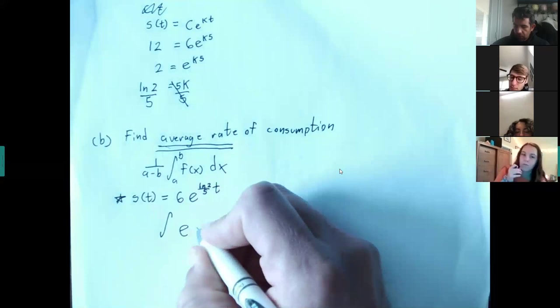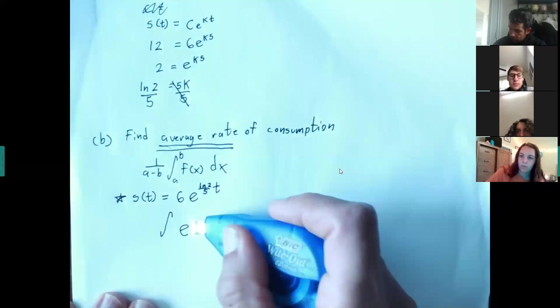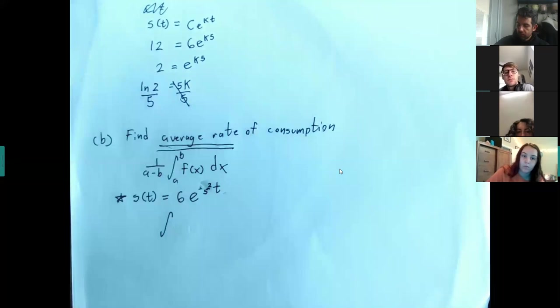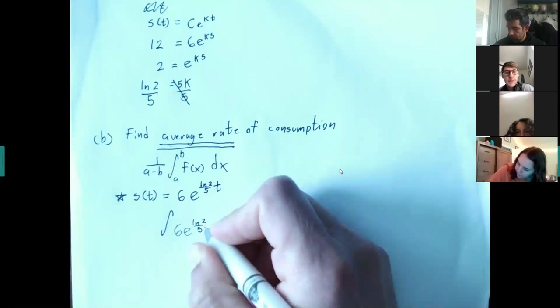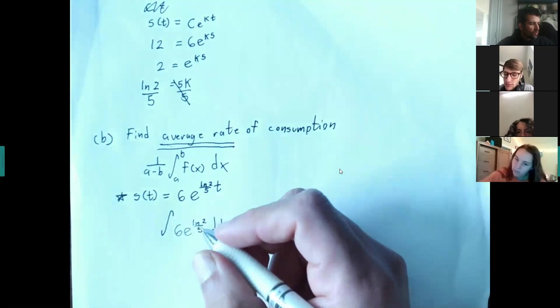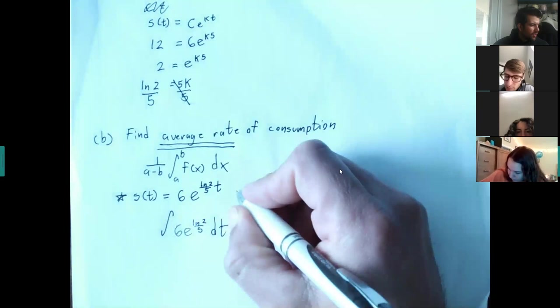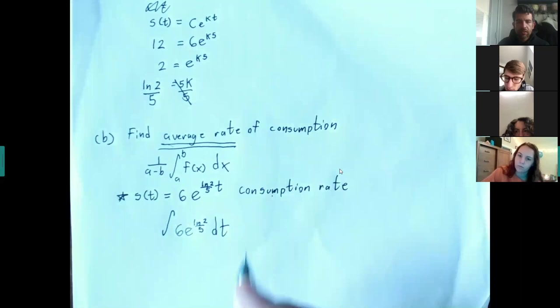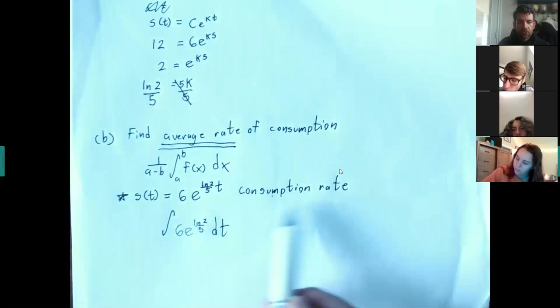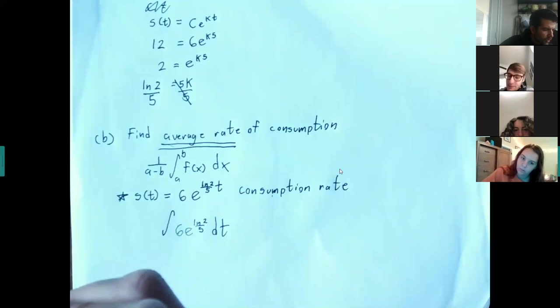To find the average rate of consumption, I'll have to integrate. Let me clarify — this is actually the consumption rate. When I integrate that rate, the rate goes away. This is over a 10-year period. When do we start? From 1983.